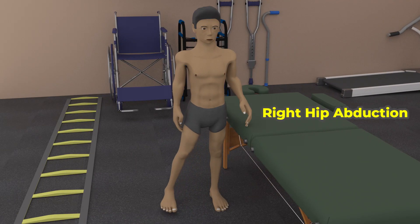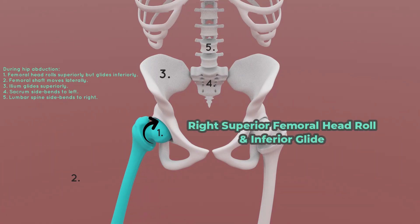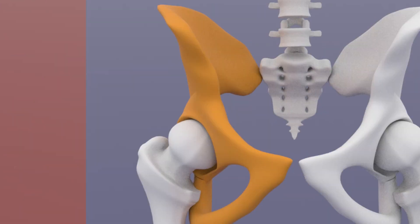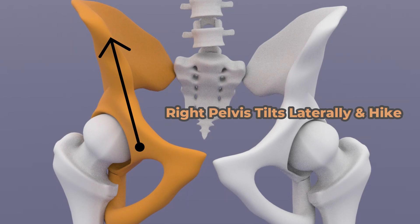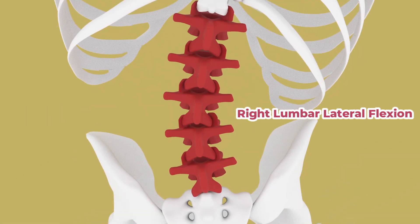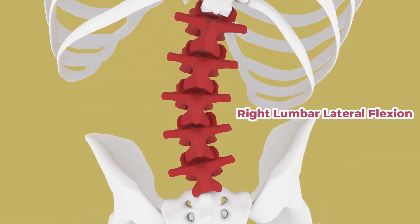During right hip abduction, there is a superior femoral head roll but an inferior femoral head glide. As it reaches its maximum allowable range of abduction, then the right pelvis starts to tilt laterally or hike. As the maximum allowable hike is reached, then the lumbar spine laterally flexes to the right.